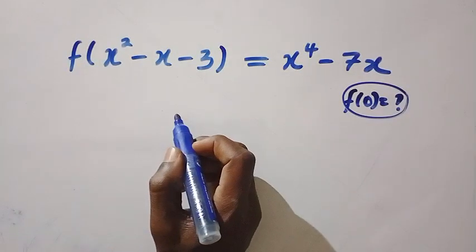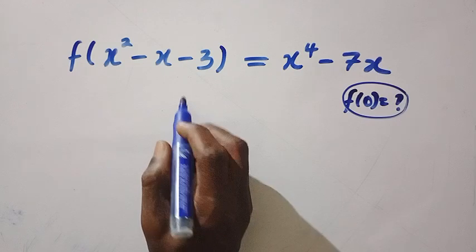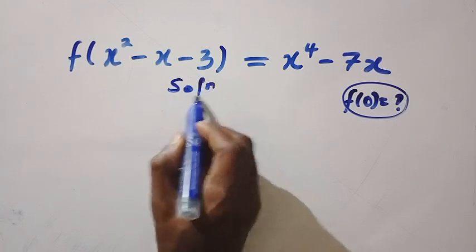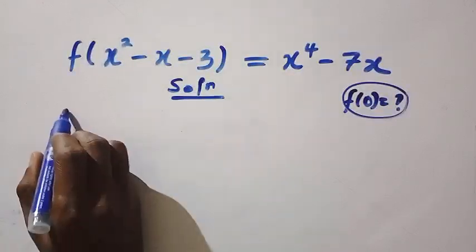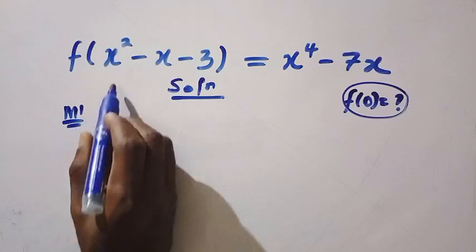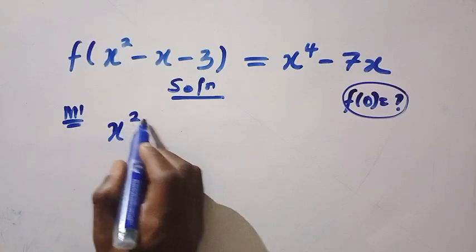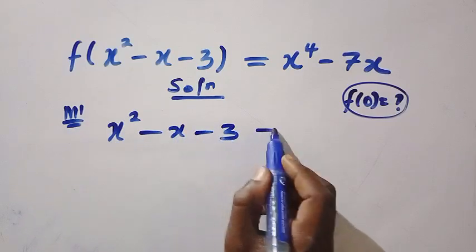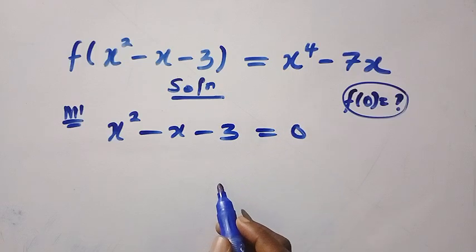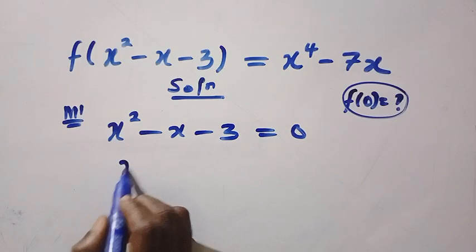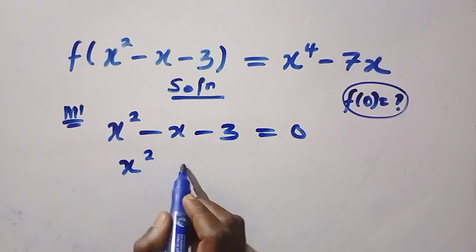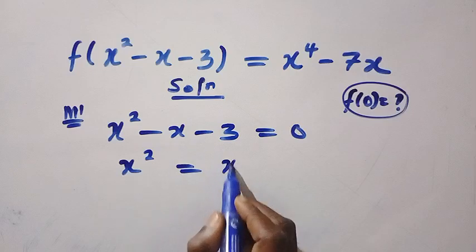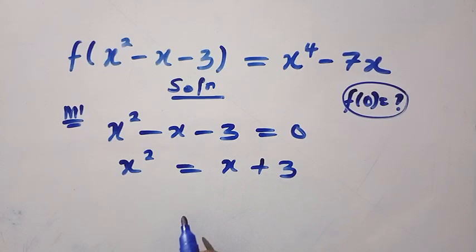I will be solving this question in two different ways. Let's consider the solution. In the first method, if I let x squared minus x minus 3 equal to 0, then at this point we have x squared equal to x plus 3. This is what we are going to have.